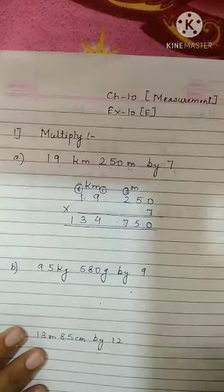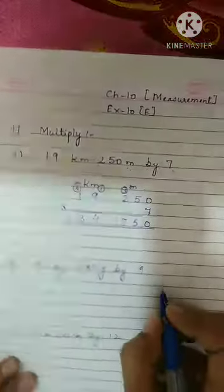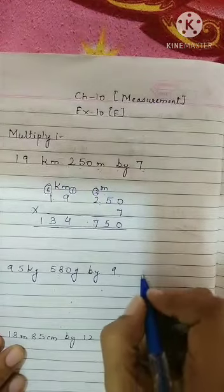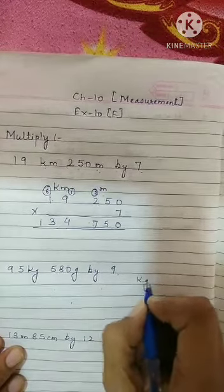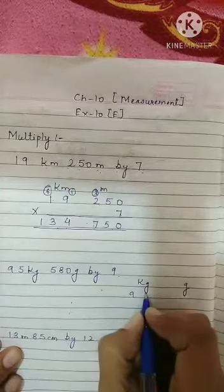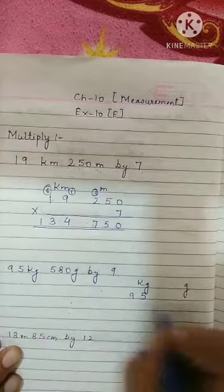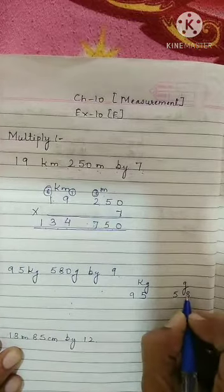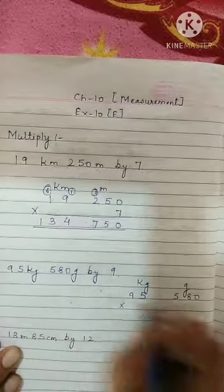Now come to the next one. It is given Kilogram and Gram. I am writing over here Kilograms and Grams. So 95 Kilograms, 580 Grams, multiply by 9.